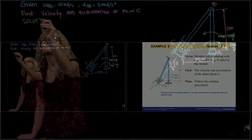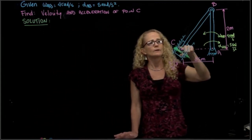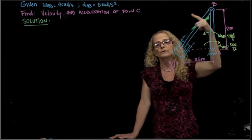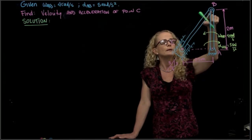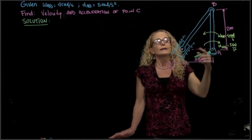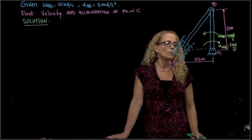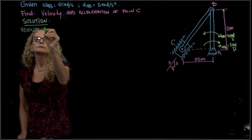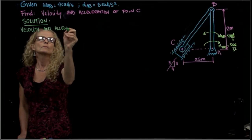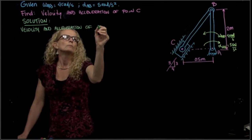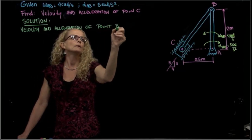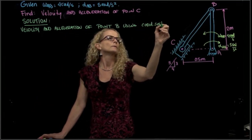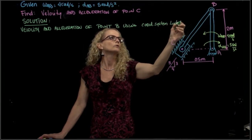How will we approach this? Since we want to find the velocity of C, we will use point B, but we don't have the velocity and acceleration from point B. So the first thing I'm going to do is find the velocity and acceleration of point B using point A, which is easy because point A is a fixed point.